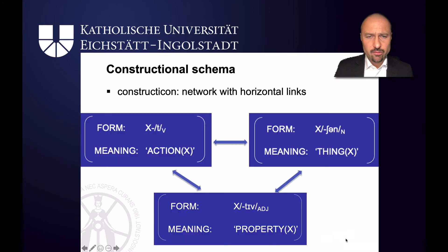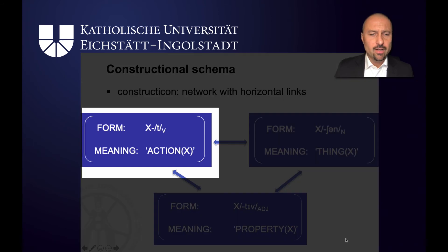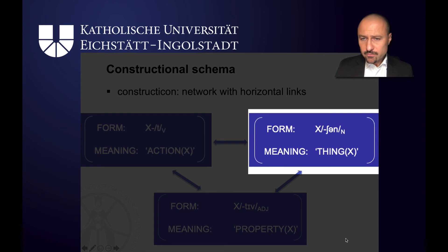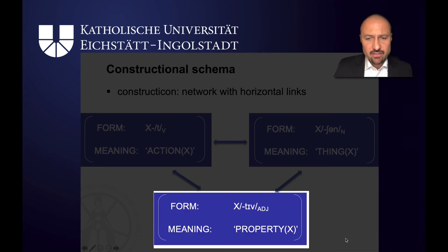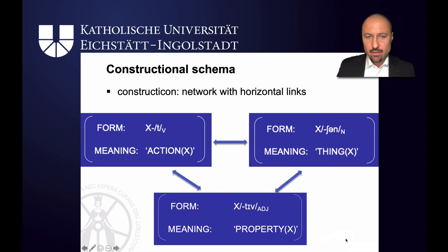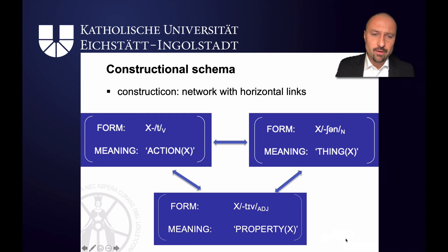In contrast, in a constructional approach we assume this is a network of schematic constructions. Attract, suggest, and prohibit lead to a verbal construction ending in -t on the form level, linked to the meaning of an action. Attraction, prohibition, and suggestion are nouns ending in -tion that denote a thing. Attractive, suggestive, and prohibitive end in -tive and are adjectives on the formal level, with the meaning of a property. Once you've got these schemas, you can also have exceptions like illusion and elusive — elusive linked to the adjective schema, illusion linked to the noun schema — and it's simply an accident that there is no corresponding verb.